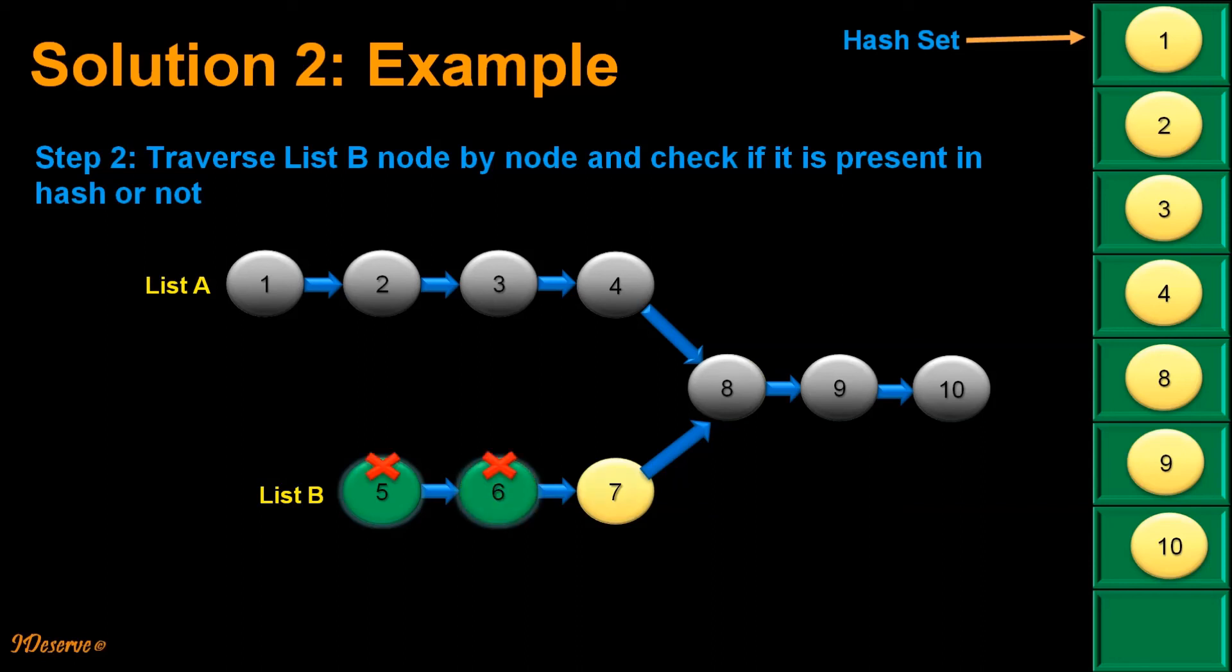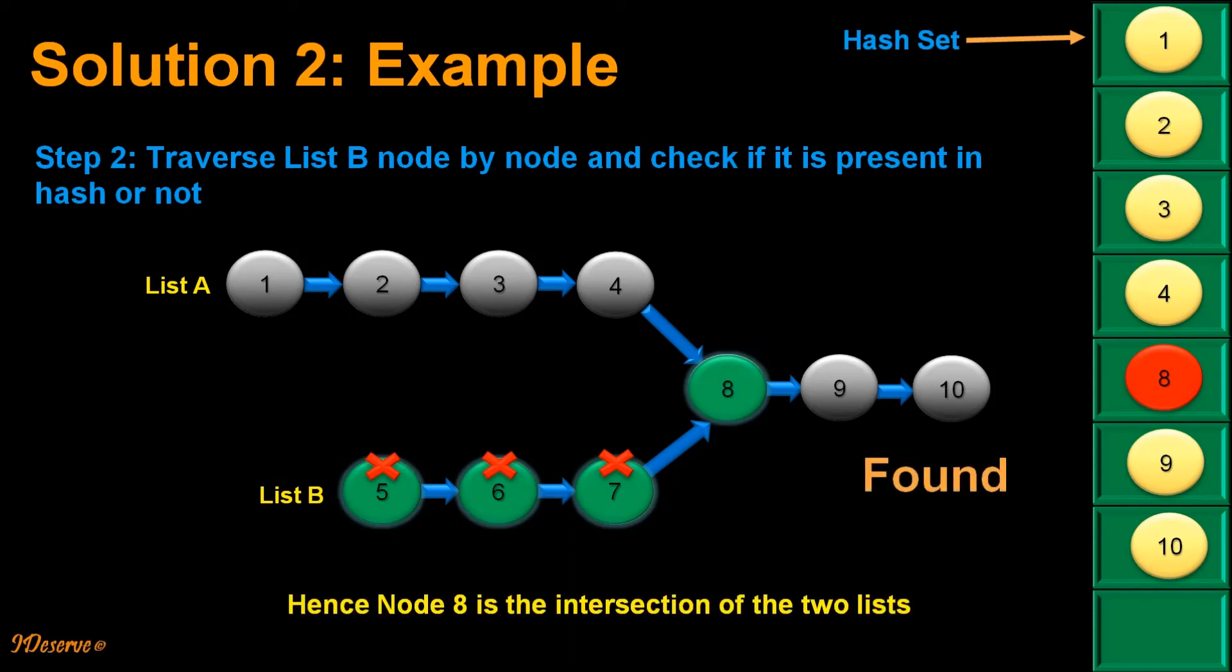Second element not present. Third not present. We come to fourth element and we see it is present. So node 8 is the intersection of two lists.